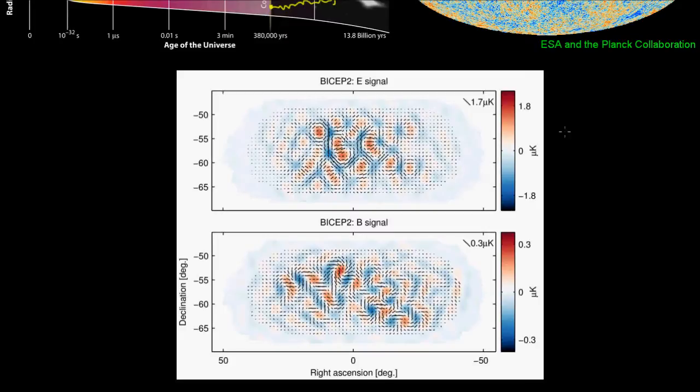Now, on these polarization maps, we can find two kinds of patterns. And we refer to these two patterns as either E modes or B modes. Now, the E mode pattern looks something like this. All of the polarization directions seem to be coming out of a central point, or they can be going directly around a central point.